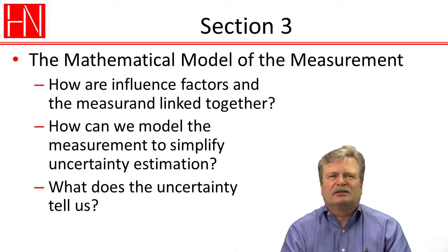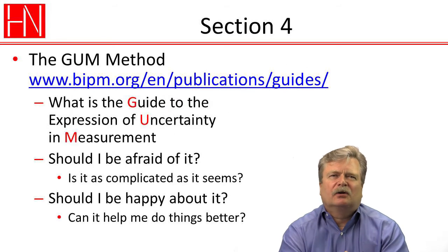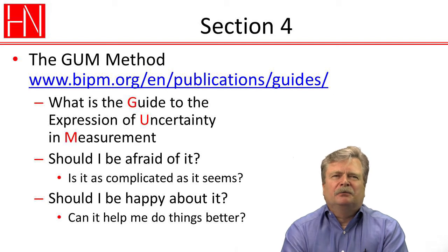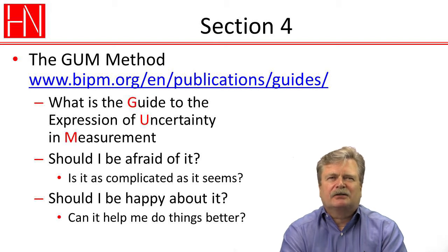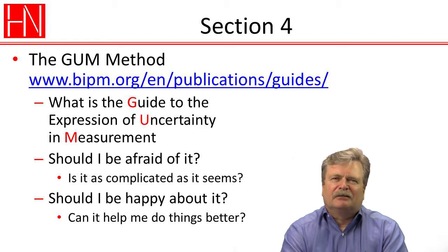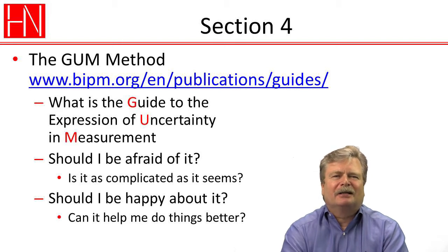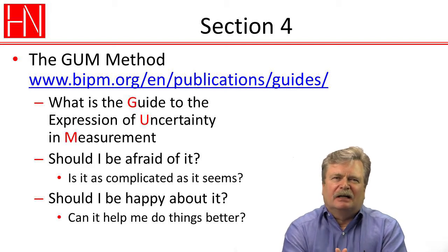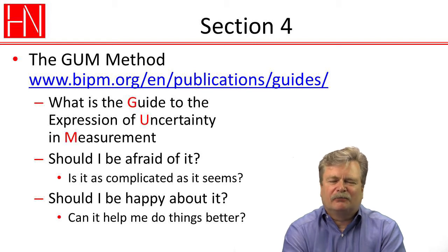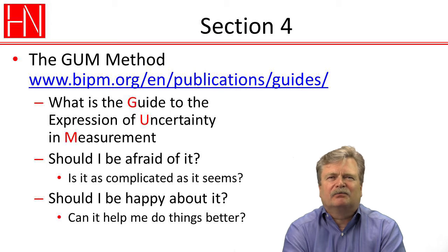We're going to talk about what the uncertainty tells us. In section four, we're going to talk about what we call the GUM method. GUM is short for the Guide to the Expression of Uncertainty in Measurement. I put up a URL where you can download the guide for free. It is from an organization called BIPM, which is the International Bureau of Weights and Measures — an international organization located outside Paris, so the name is in French, though the guide is in English. The guide was first issued in 1993; the current version is from 2008, and it hasn't changed much since the fundamental method is very generic.